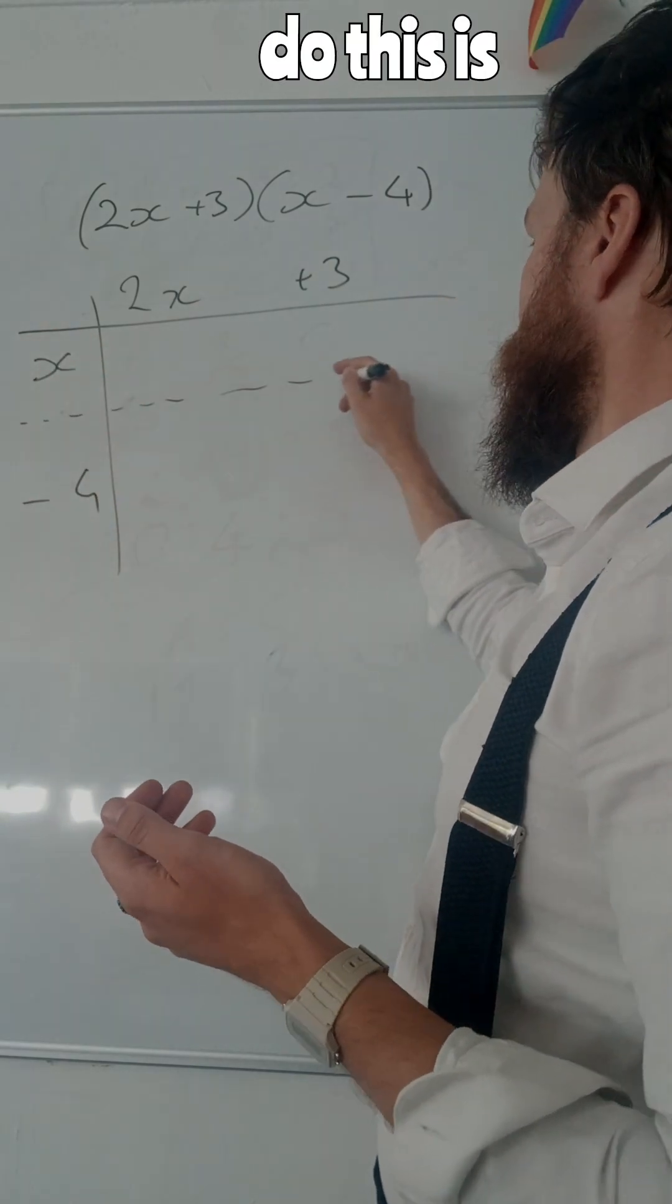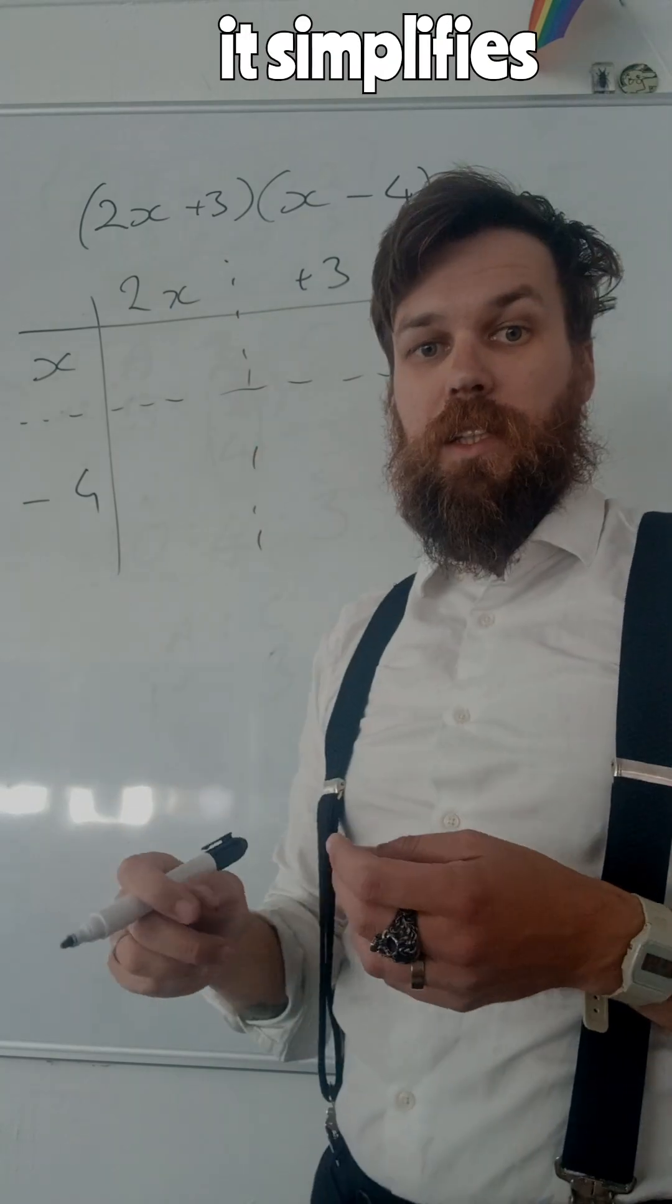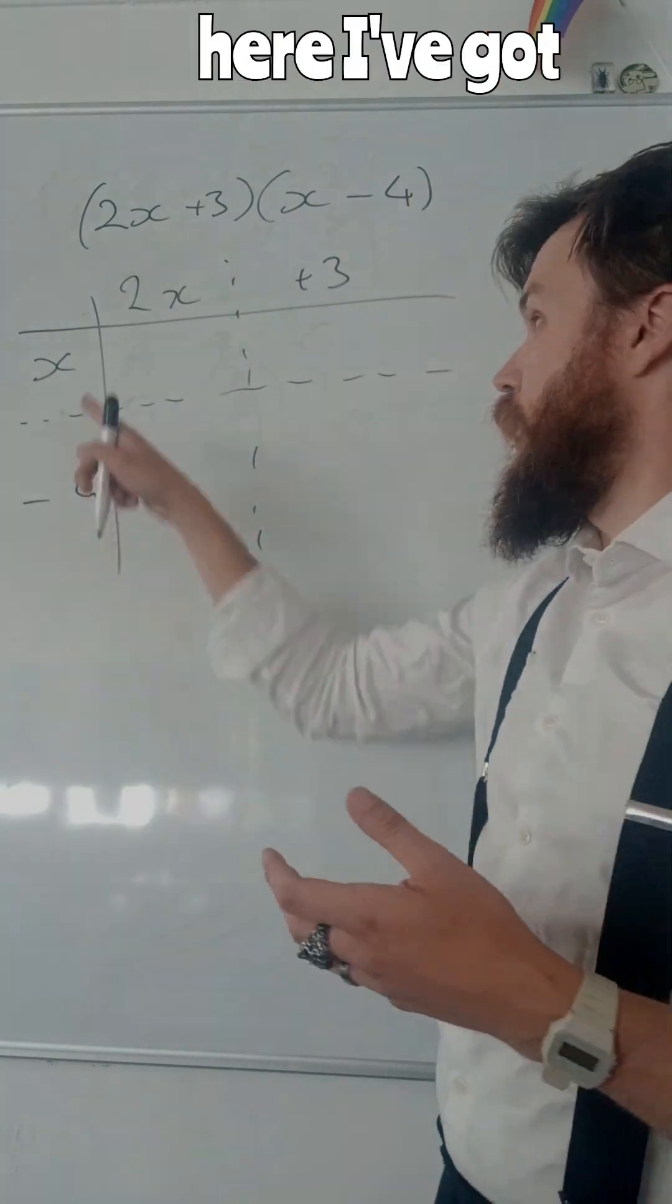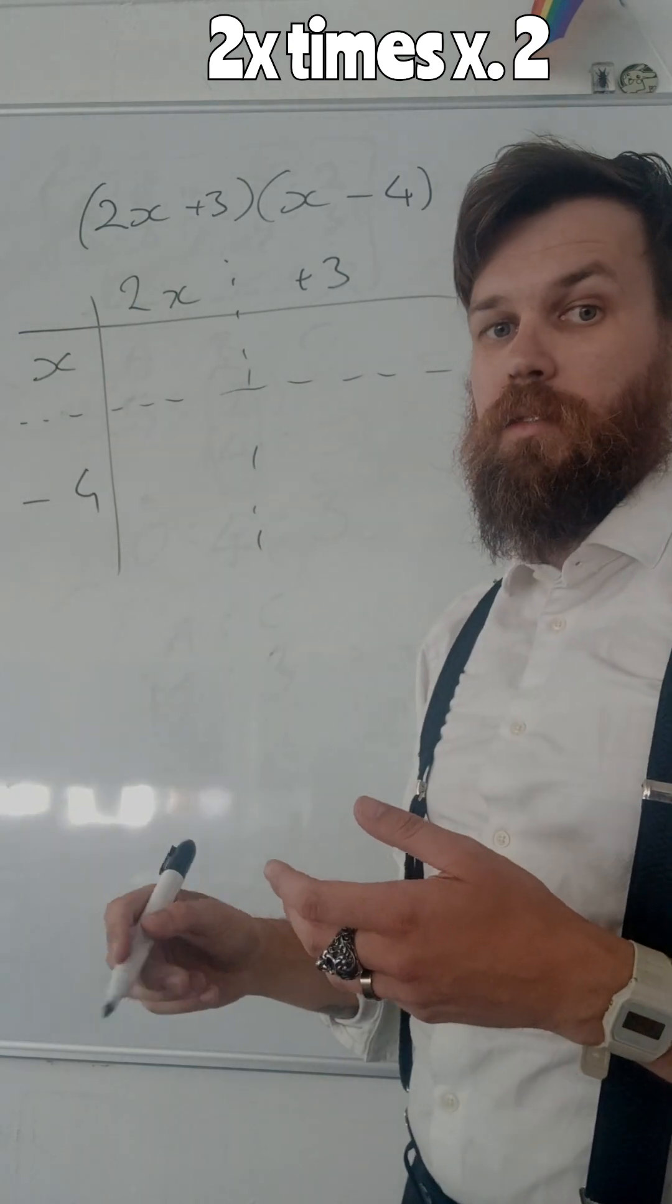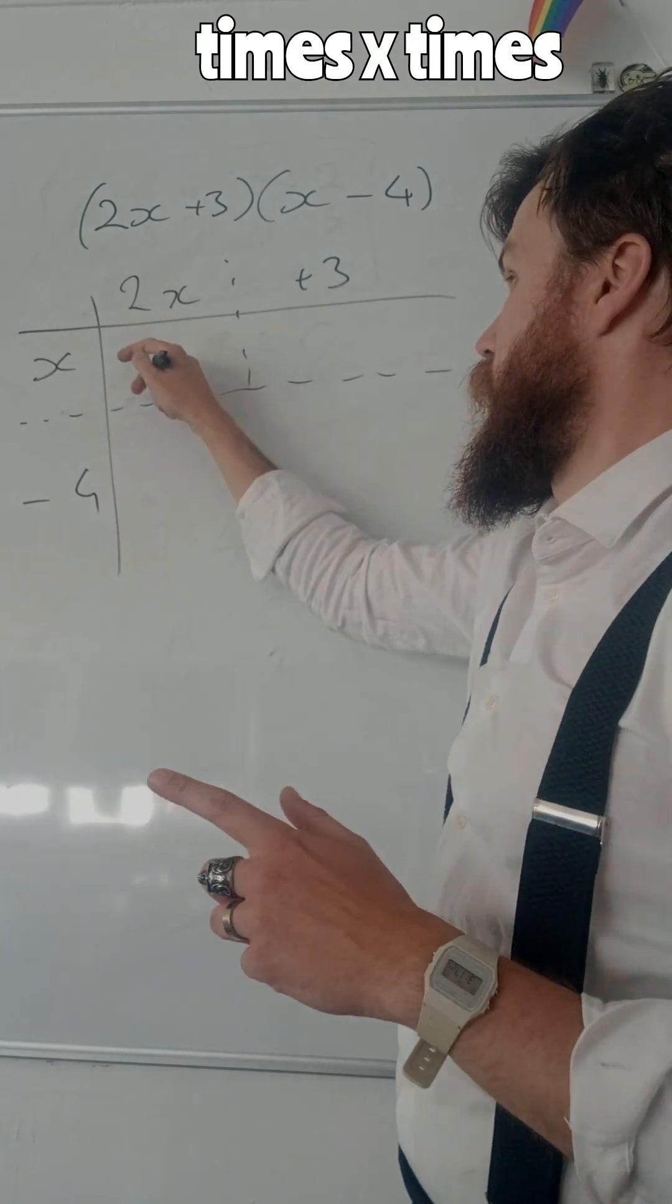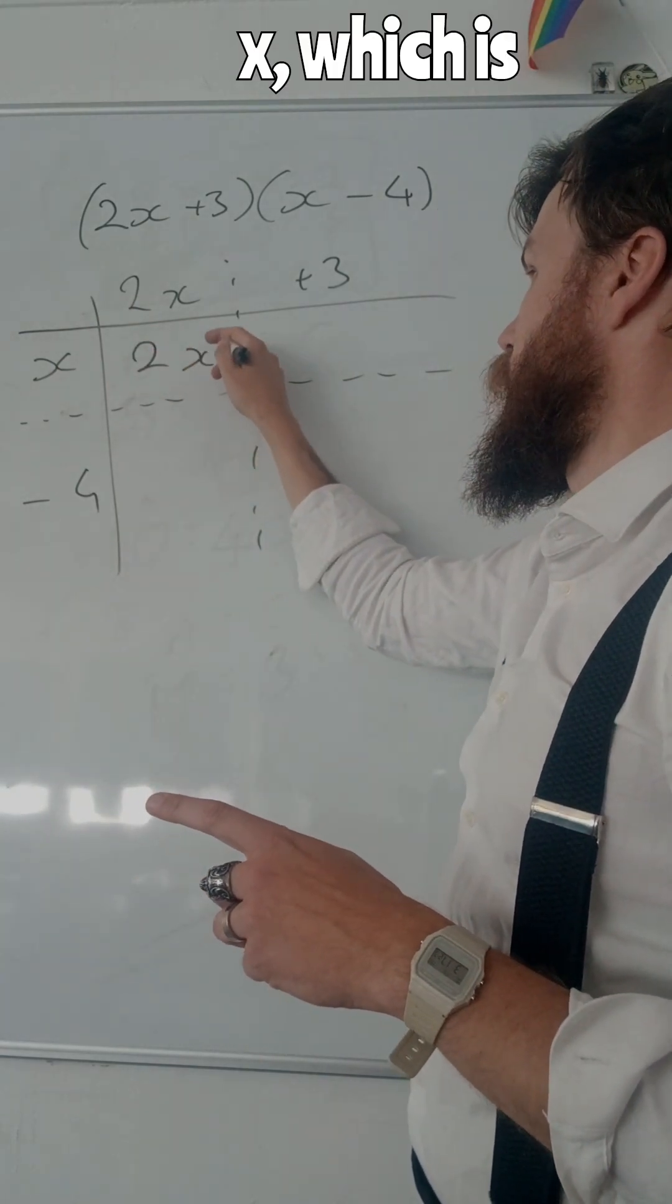Now the reason I do this is it simplifies what I need to multiply. So here I've got 2x times x, 2 times x times x, which is 2x squared.